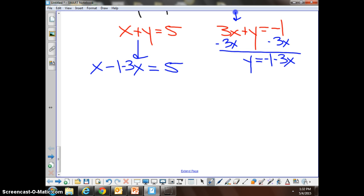Did he do that right? Yes or no? If y is negative 1 minus 3x, he took the y out and he put in negative 1 minus 3x, right? Matthew, what's next? Combine like terms? Yeah. And what do you get?